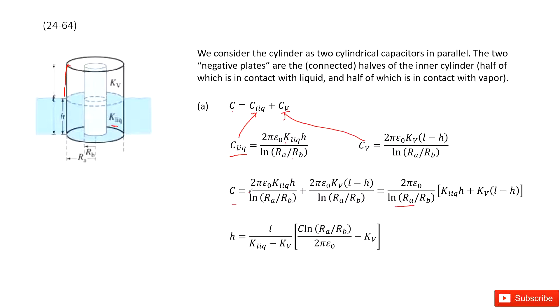Now it tells you the C is given. The capacitance is given. You need to find a function for h. So easy. You just reorganize this equation. You get a function for h in these terms.